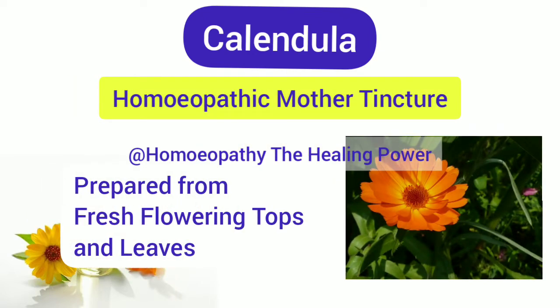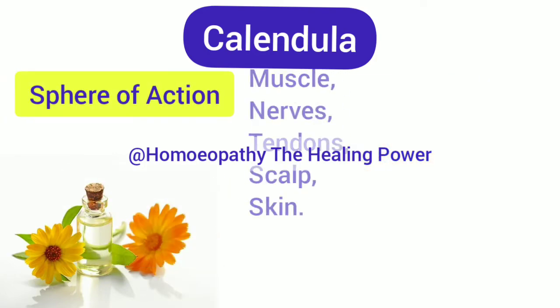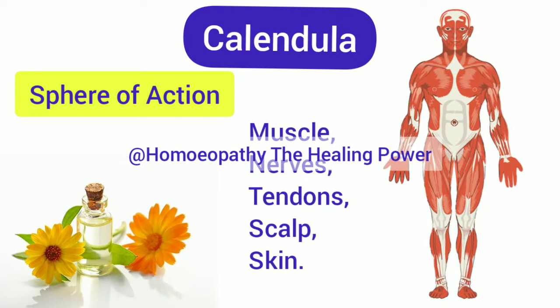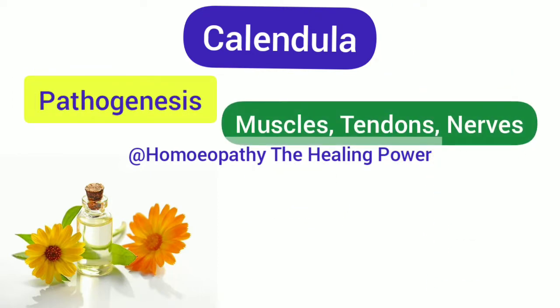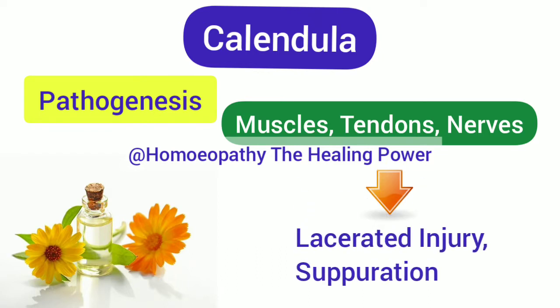Sphere of action: Calendula acts on muscles, tendons, nerves, scalp, and skin. By its action on muscles, tendons, and nerves, Calendula produces a condition similar to that of lacerated injuries and separation. This means Calendula has its special action on lacerated injuries and on separation.